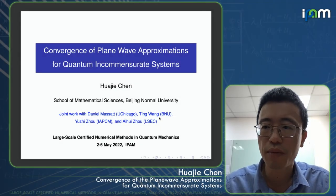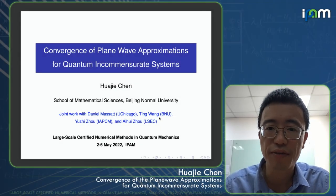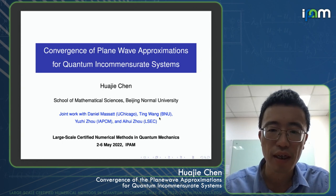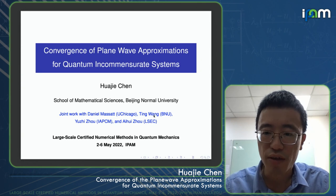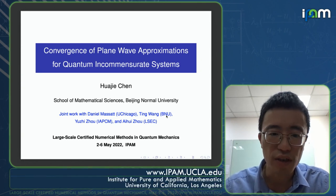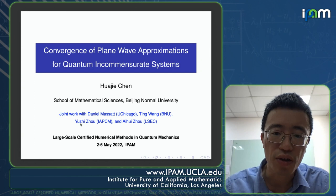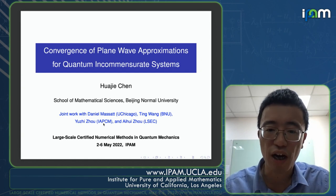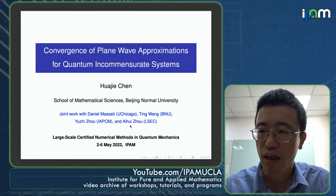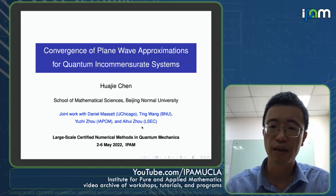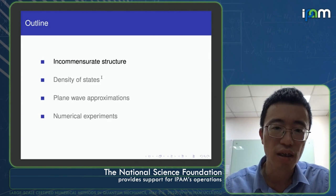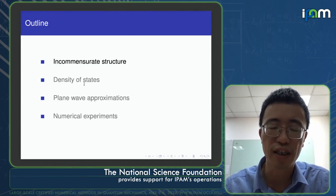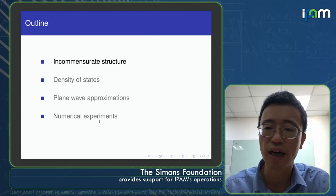I will talk about the plane wave approximations for eigenvalue problems arising from an incommensurate system. This is joint work with Daniel Massat from University of Chicago, my PhD student Ting Wang at Beijing Normal University, and two collaborators: Yu Zizhou at Beijing Institute of Applied Physics and Computational Mathematics, and Na Hui Zhou from Chinese Academy of Sciences. I will first talk about incommensurate structures and the objects we are interested in, then plane wave approximations, and then show some numerical experiments.